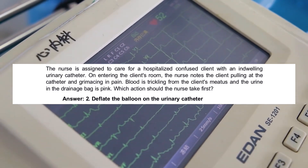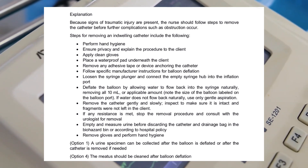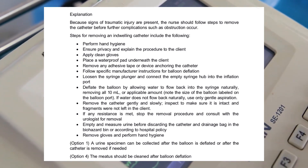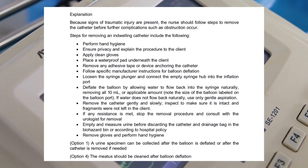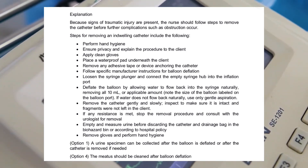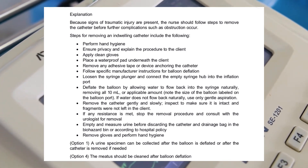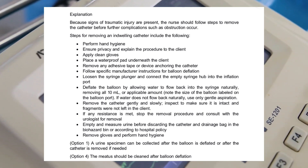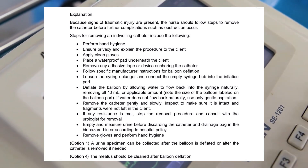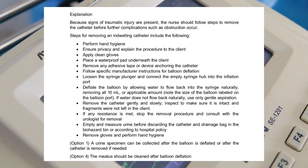Answer: 2. Deflate the balloon on the urinary catheter. Explanation: Because signs of traumatic injury are present, the nurse should follow steps to remove the catheter before further complications such as obstruction occur. Steps for removing an indwelling catheter include: perform hand hygiene, ensure privacy and explain the procedure to the client, apply clean gloves, place a waterproof pad underneath the client, and remove any adhesive tape or device anchoring the catheter.